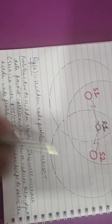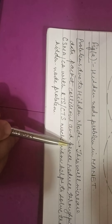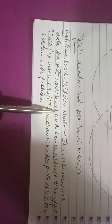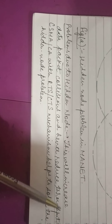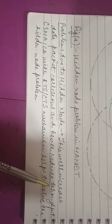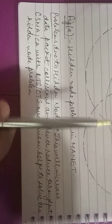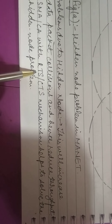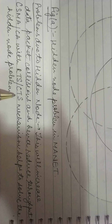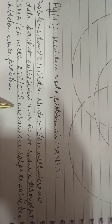This hidden node problem will increase the data packet collision and hence reduce the throughput. Is there any method of overcoming this hidden node problem? Yes, there is. The carrier sense multiple access with RTS — that is Request to Send — or CTS — that is Clear to Send — mechanism can help to solve the hidden node problem. Next, let us see what the exposed node problem is.